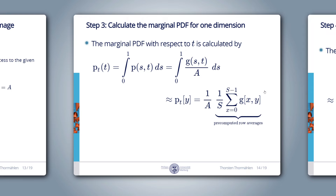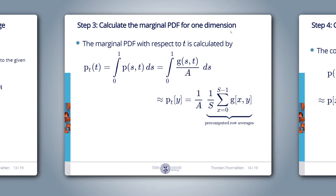Step 3: calculate the marginal PDF for one dimension. We compute the marginal PDF with respect to T by solving the integral from 0 to 1 of p(s,t) ds. Substituting g(s,t)/A and applying a Riemann sum, we see this is the same as the row averages divided by the image average A. So we simply divide the row averages by the image average to get the marginal PDF.